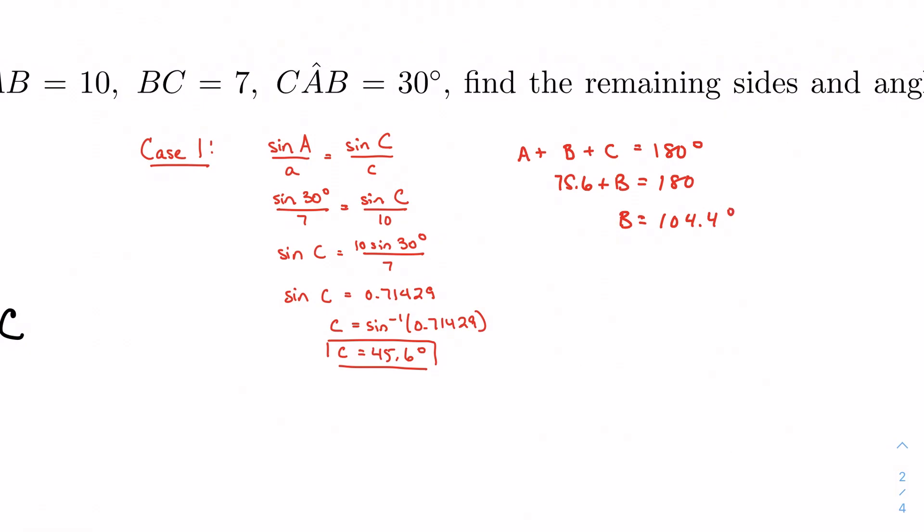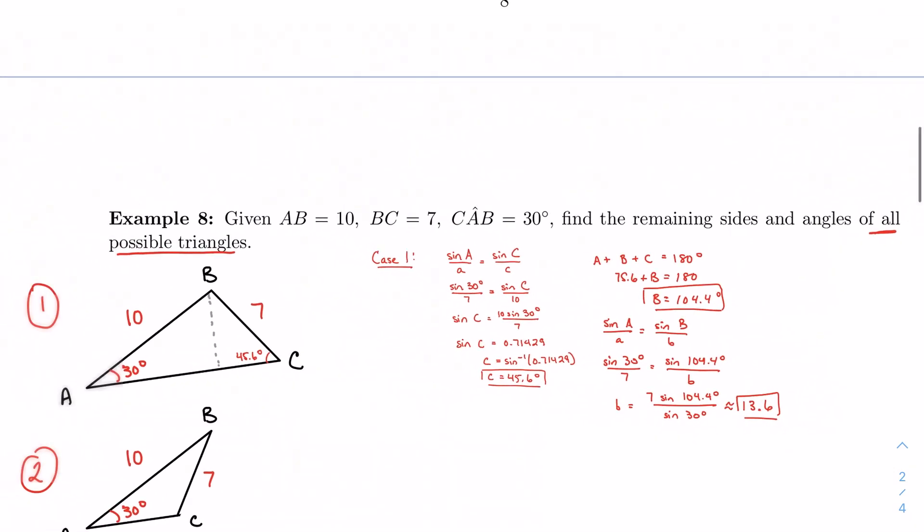And then I can go ahead and use my law of sines again. Sine of A over a equals sine of B over b. It's sine of 30 degrees over 7 equals sine of 104.4 degrees over b. And with some manipulation, I get 13.56, or 13.6, if I use my three significant figures. This is 13.6. Great.